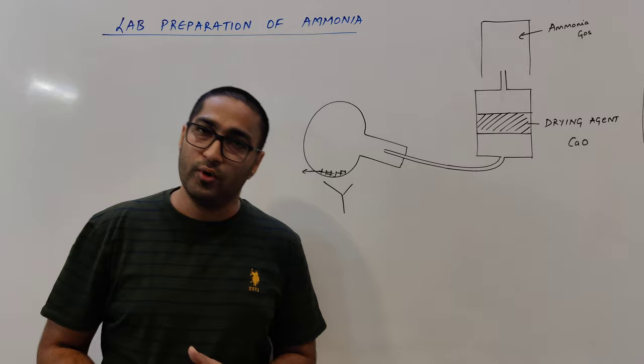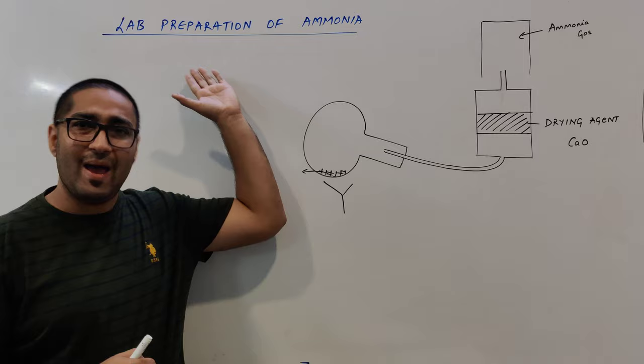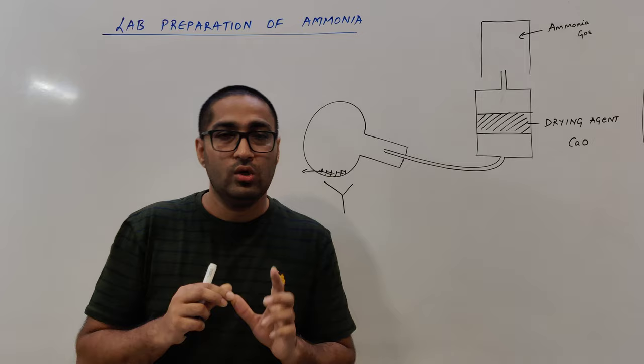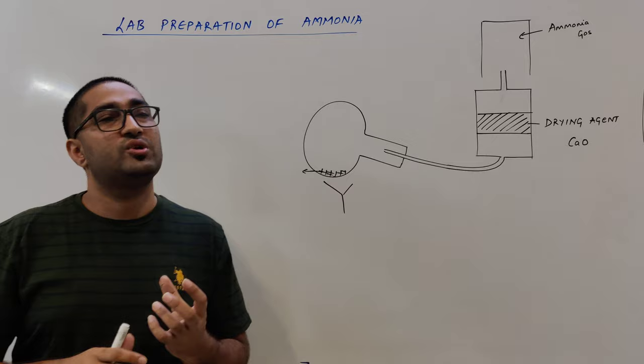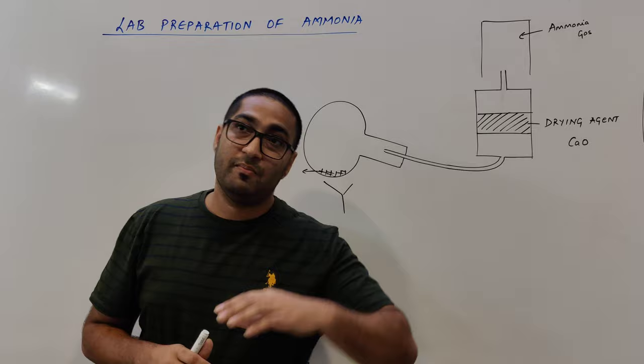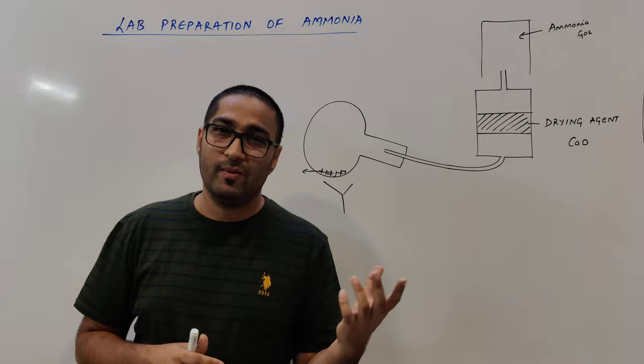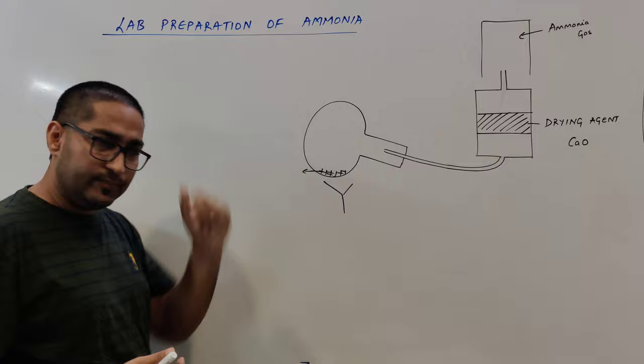Hello students, I am going to talk about lab preparation of ammonia. A student asked me: what is the difference between a lab preparation and a manufacture? Lab preparation is basically to prepare a small quantity of a substance, whereas manufacture is a large production done in an industrial way.